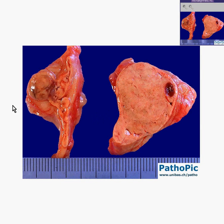You know that this is an adrenal gland because you can see in areas this uniform approximately one millimeter thick ribbon of bright yellow cortex sandwiching browner, redder material between the two cortical layers, which is the adrenal medulla. Also note that in areas the cortex is uniform, as it should be.